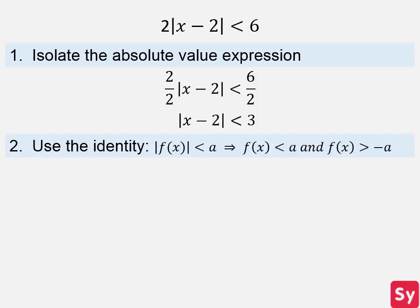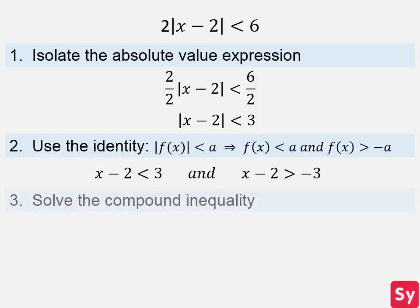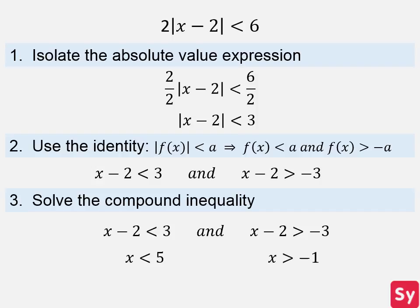Next, we use this identity. So we have x minus 2 is less than 3, and x minus 2 is greater than negative 3. Finally, we solve the compound inequality. We solve x minus 2 is less than 3: we add 2 to each side and get x is less than 5. Then we solve x minus 2 is greater than negative 3: we add 2 to each side and get x is greater than negative 1. Now we can combine our inequalities and get negative 1 is less than x, which is less than 5.